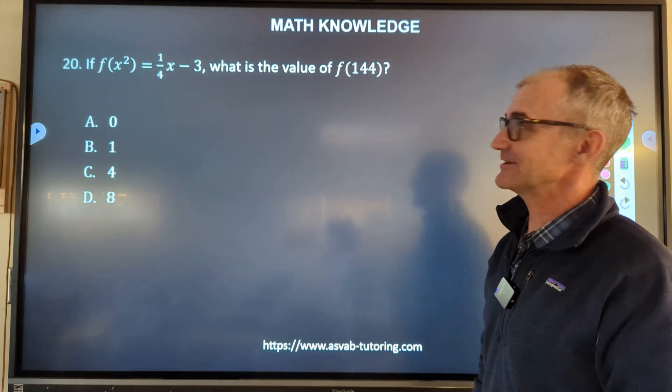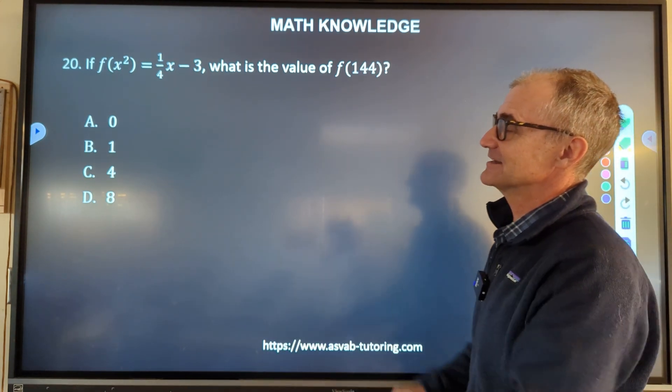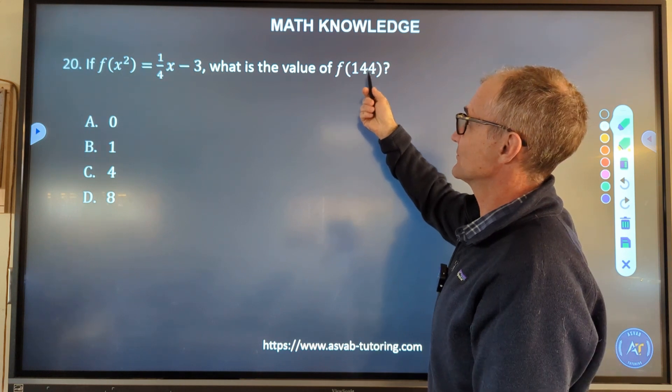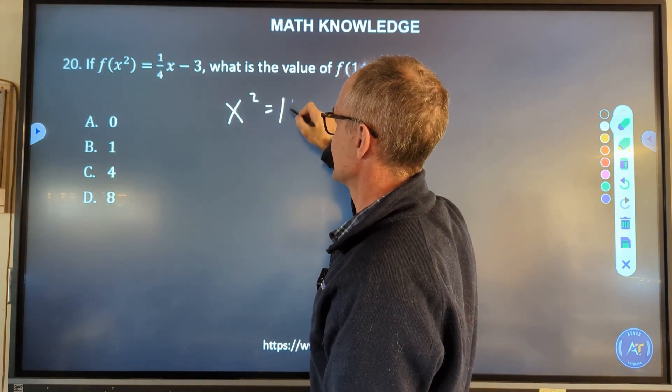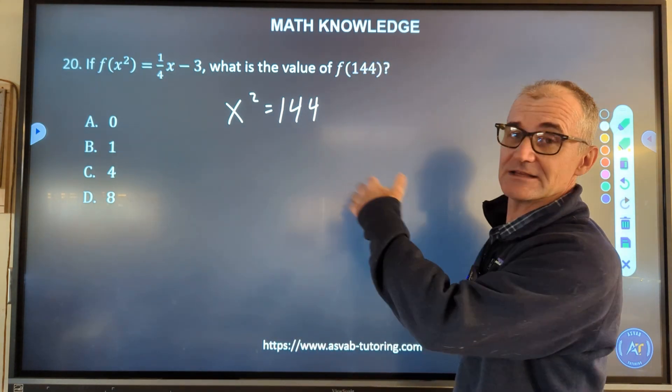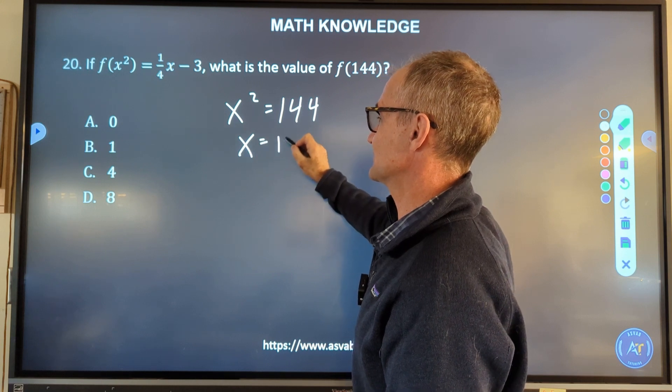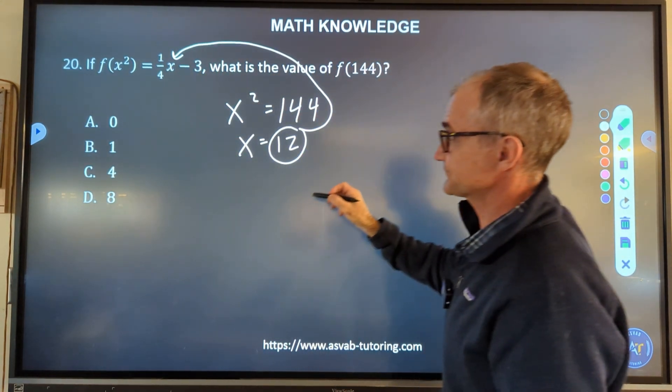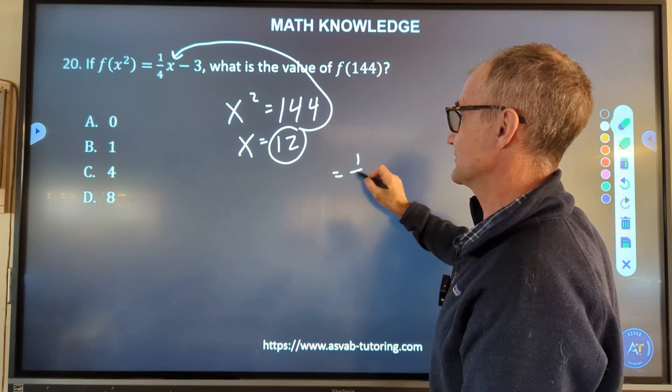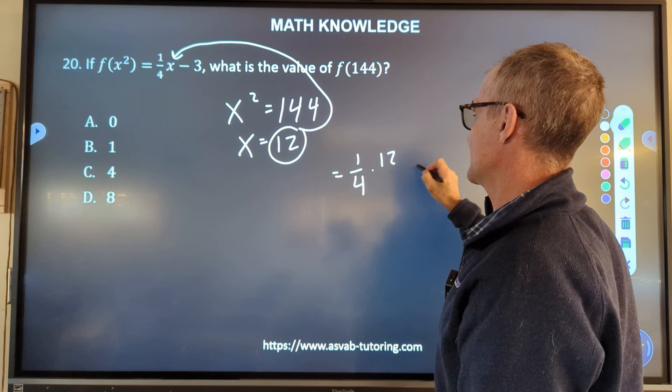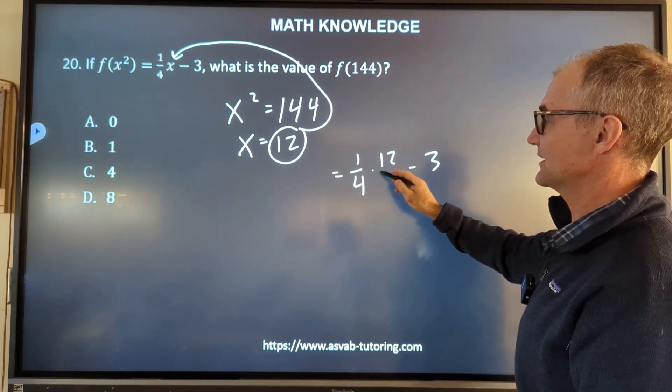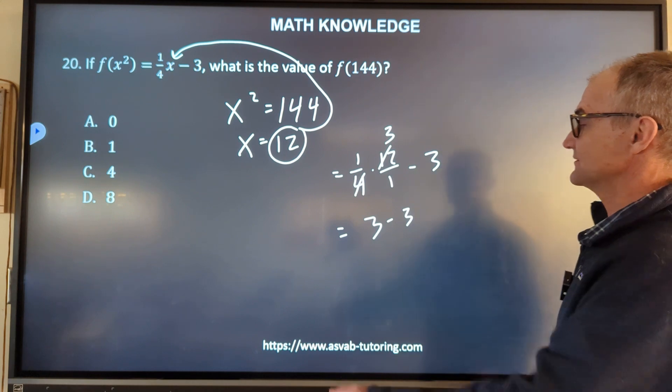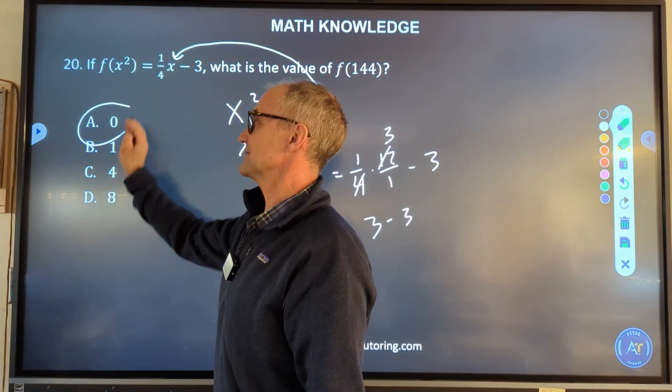Number 20 right here, our last problem. This is a hard one right here. A lot of notation. This is f(x) notation, but I have f(x²). And what is the value of f(144)? So 144 and x² are the same thing. So x² and 144 have to be the same thing. I take the square root of both sides. I see x equals 12. And then now that I have that value for x, I take that value for x and I plug it right in there. So f(x²) is going to be equal to 1/4 times my x value, 12 minus 3. So 1/4 times 12, that's a fraction. 4 will go in here one time and here three times. And then that's going to give me 3 right here minus 3. So 3 minus 3 is 0, and that's my correct answer right there.